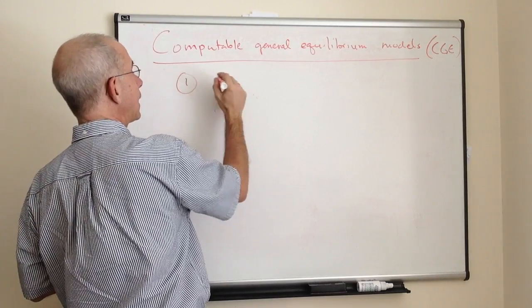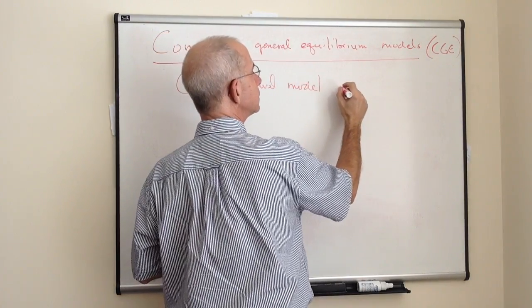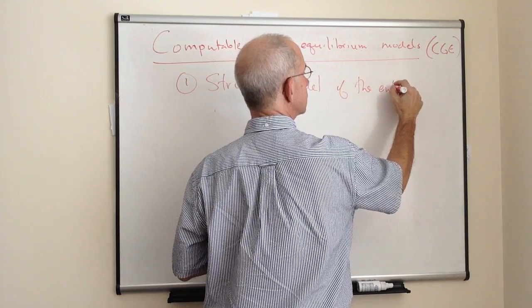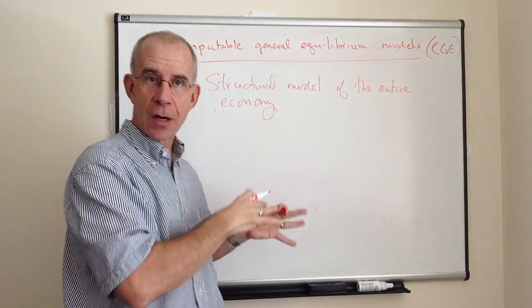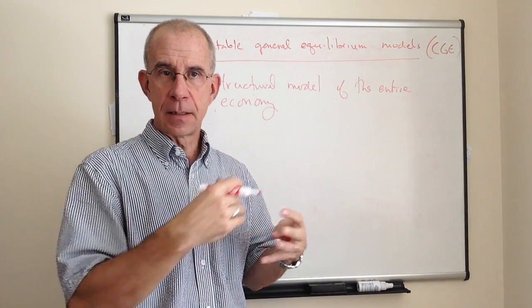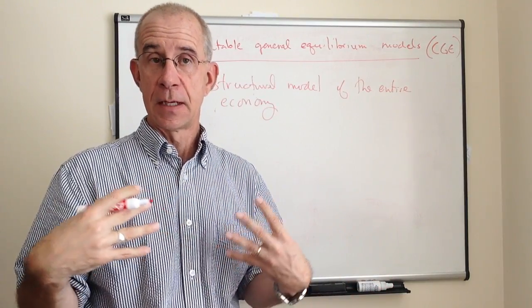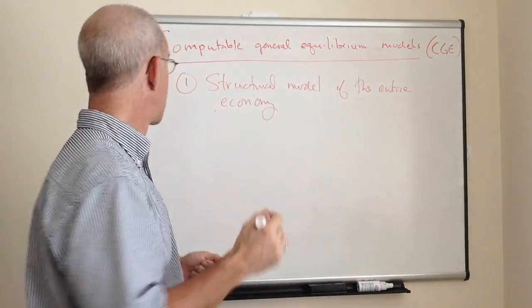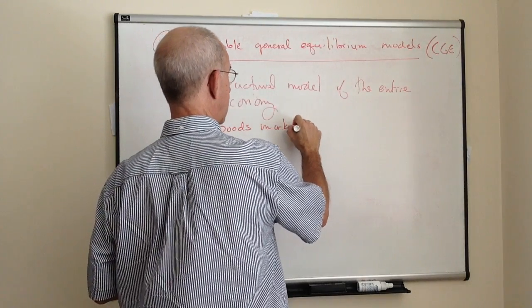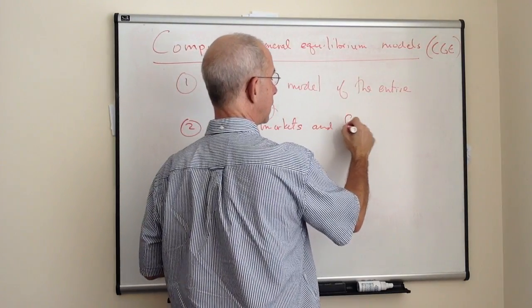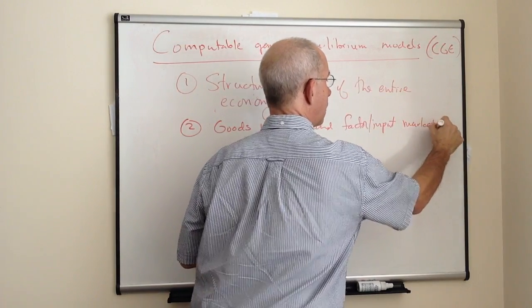First thing to keep in mind: it is a structural model in principle of the entire economy. It's a general equilibrium model trying to model the supply and demand across the entire economy and the relationships between those different parts. It involves goods markets and factor or input markets for the entire economy.